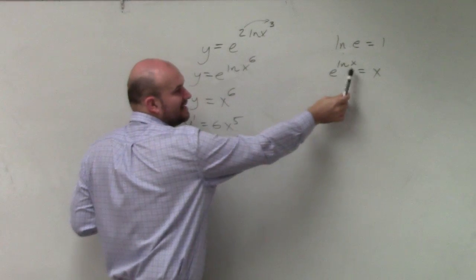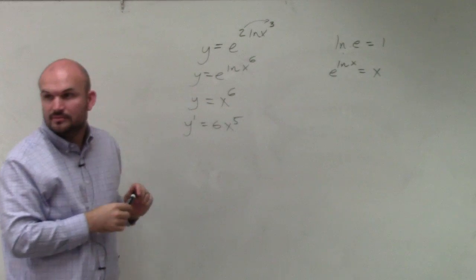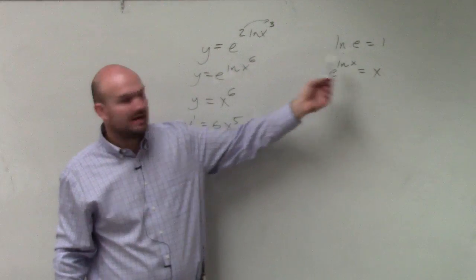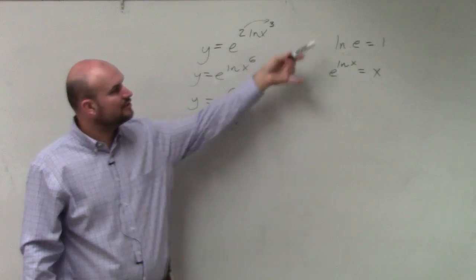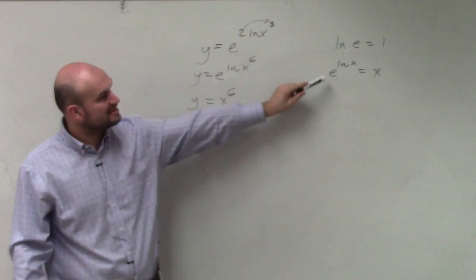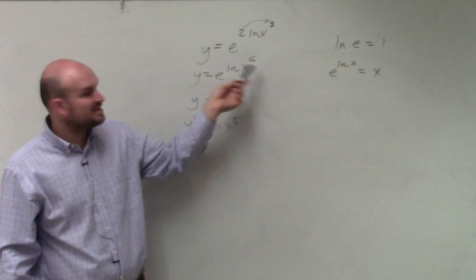Because by bringing up the 2, I can now apply this property of logarithm that we have. So just in case you see something like this, remember to look for these kinds of properties of logarithms, especially this one. We can bring that 2 up, so that gives you 6.